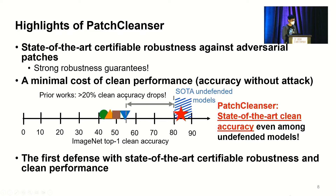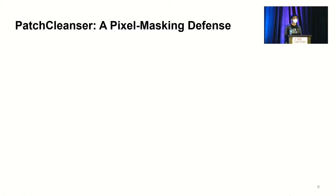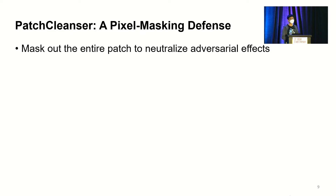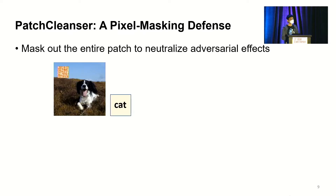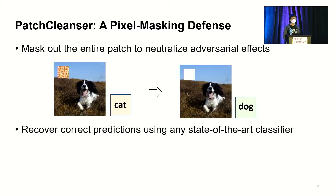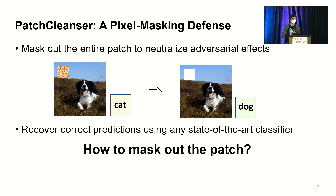Now I will talk about the defense algorithm. In Patch Cleanser, we propose a pixel masking strategy. The idea is simple: we try to mask out the entire patch to neutralize the adversarial effect. Once we remove all the adversarial pixels, we can recover the correct prediction using any state-of-the-art image classifier. The main challenge is how to mask out the patch without knowing where it is, and especially to do so in a certifiably robust manner.